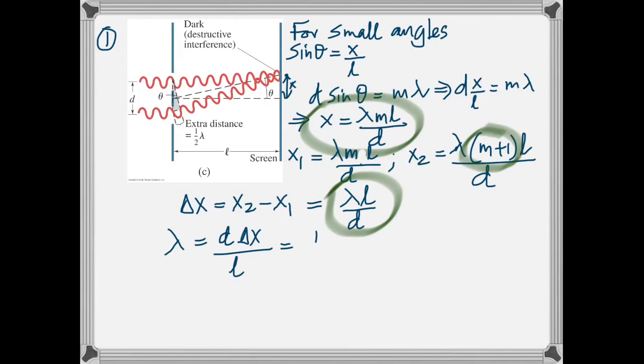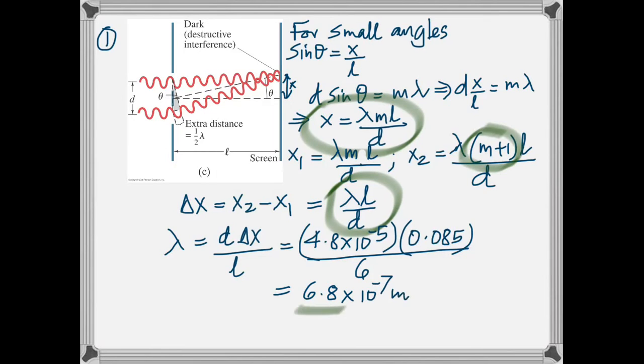Now rearrange that and make lambda the subject. That's the distance between the screens, then you have 8.5 cm into meter. And you calculate it as 6.8 times 10 to the negative 7 meter. If that's the wavelength, then the frequency is just c by lambda, which is 4.4 times 10 to the 14 hertz.